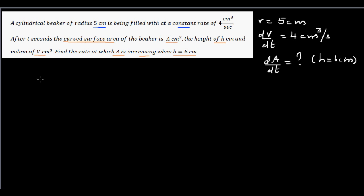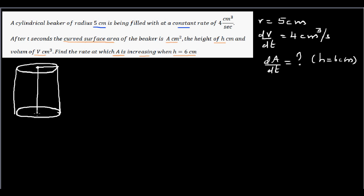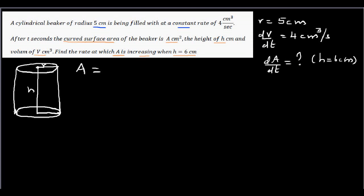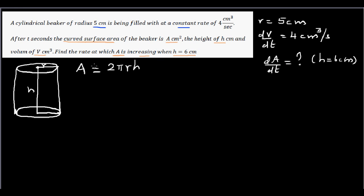Let me draw a beaker to give you a visual understanding. This is a beaker of radius 5 cm, with the radius and height labeled. First, let's talk about area. The curved surface area of a cylinder is given by the formula 2πrh. If you put r as 5, that gives 2 × 5 = 10, so area as a function of height is A = 10πh. The curved surface area is dependent on height — as height increases, the curved surface area changes.